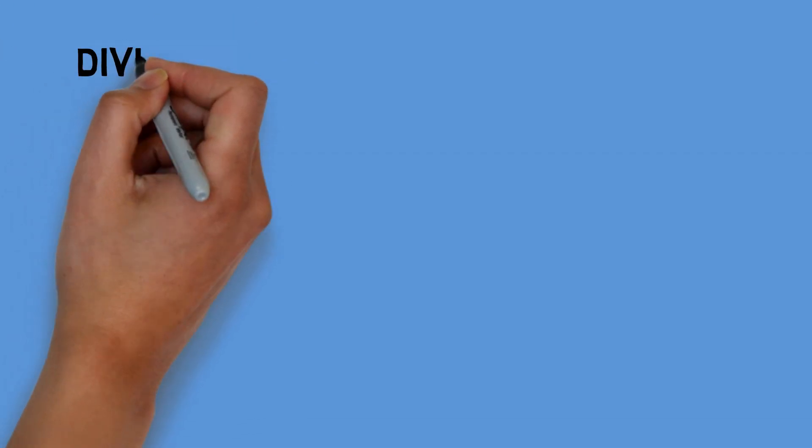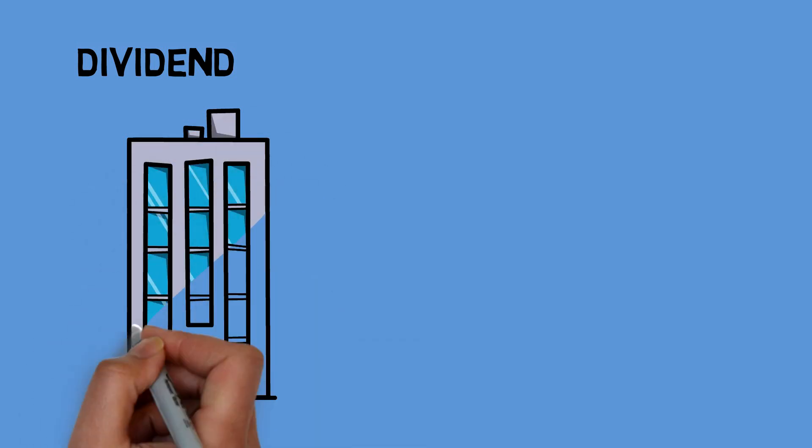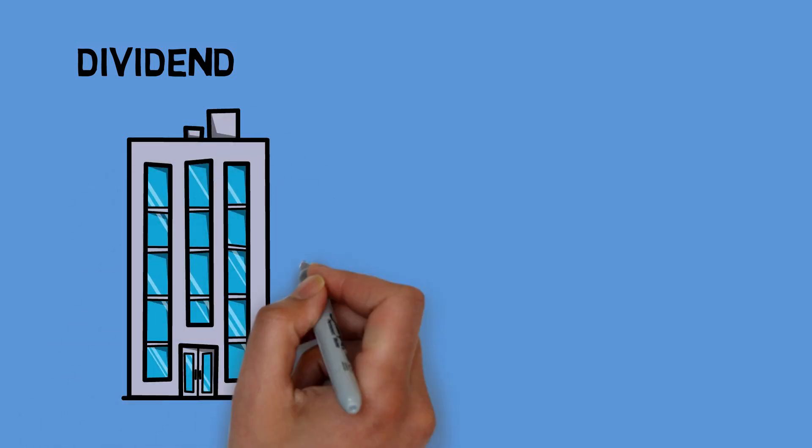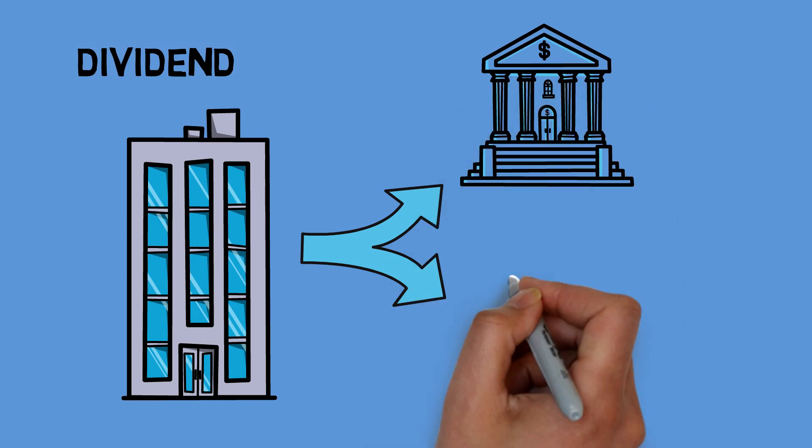Dividend is a payment that shareholders receive from the company. Basically, when a company makes a profit, they can retain those profits for reinvestment, or they can distribute those profits to the shareholders in the form of dividends.